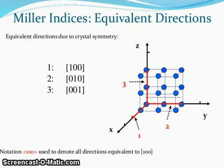Equivalent directions due to crystal symmetry: 1, 0, 0; second: 0, 1, 0; third: 0, 0, 1. Notation in angle brackets 1, 0, 0 used to denote all directions equivalent to 1, 0, 0.